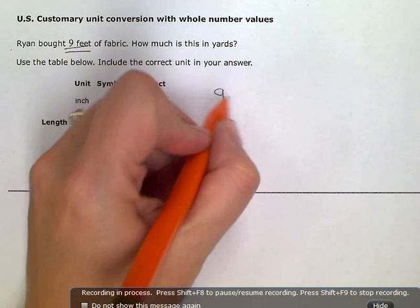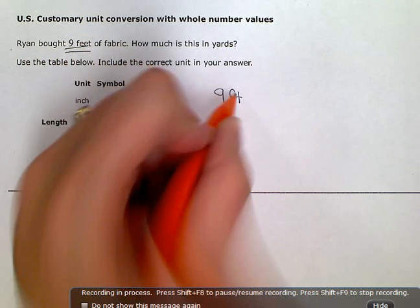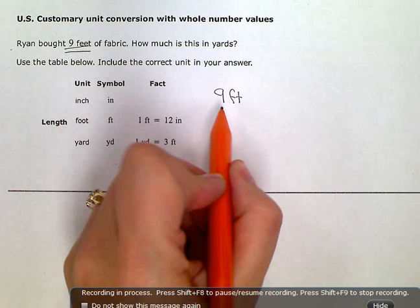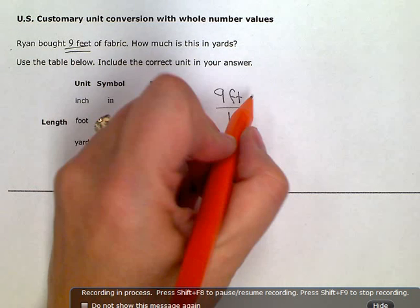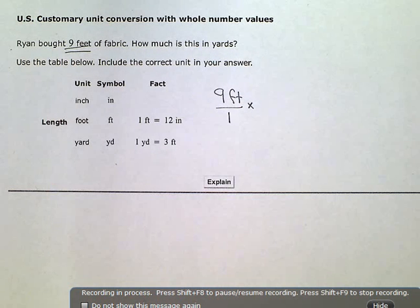Right now I have nine feet of fabric, and to write that as a fraction, I'm just going to put it over one. Then I'm always going to multiply using this method, so I'm just going to put a times there.